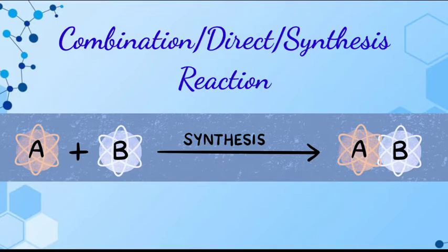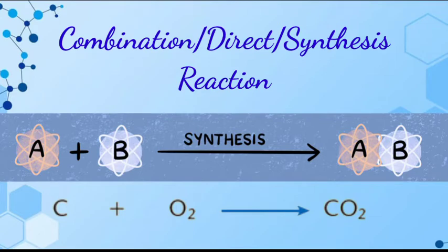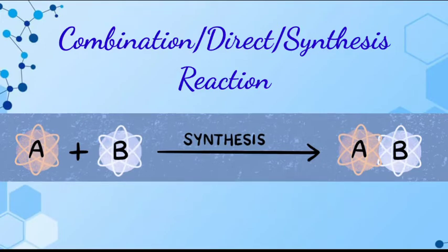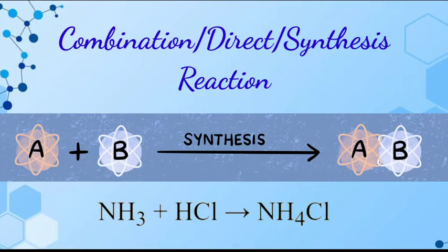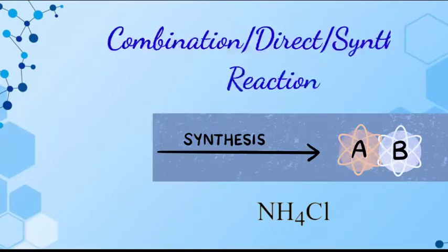For example, two elements combine to form a compound. Another example: two or more substances combine to form a single product. If ammonia and hydrogen chloride react together, they form a compound: NH3 plus HCl gives NH4Cl.